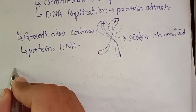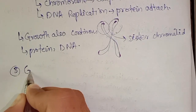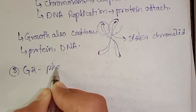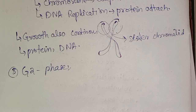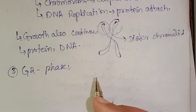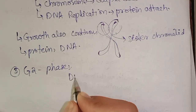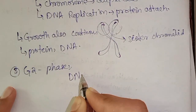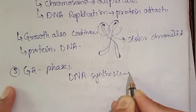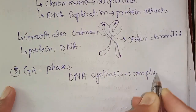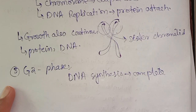The second phase is G2 phase. G2 phase is the period between the completion of DNA synthesis and the beginning of active cell division. DNA synthesis is completed in S phase; after that, the cell division phase begins.